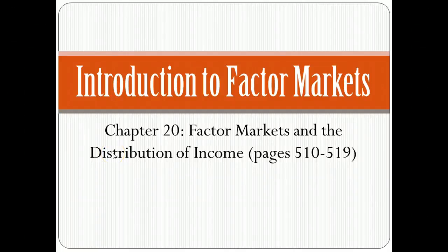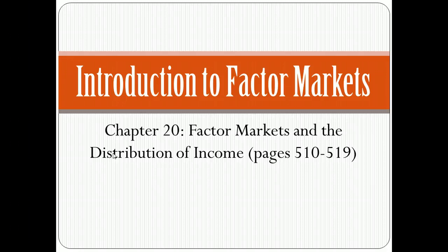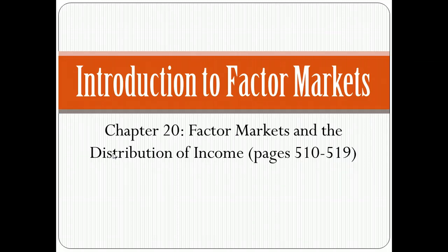Welcome back folks. Today we're going to look at factor markets — all this information is in your book, chapter 20. We're going to look at what the factors of production are, how factor prices determine the efficient allocation of resources, how factor demand for labor, land, and capital are determined, and how to calculate the profit-maximizing level of inputs that go into production.